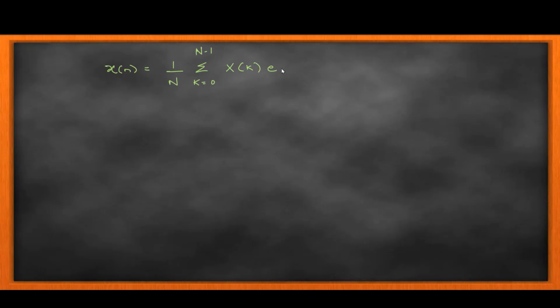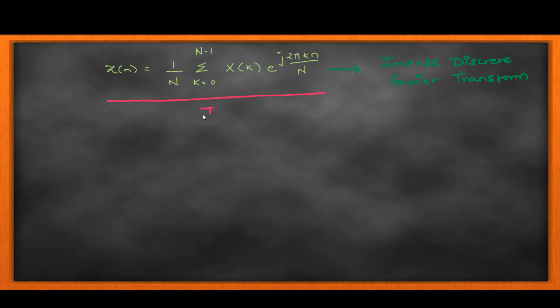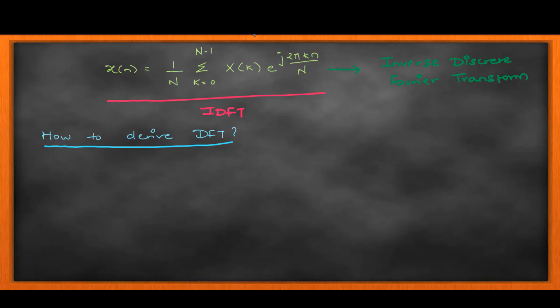We are starting with the inverse, and from the inverse we get to the discrete Fourier formula. This is your inverse discrete Fourier transform. An interview question: why is there a 1/N in this formula? That 1/N is missing in the DFT formula — we will see why. This is a question commonly asked in advanced interviews, such as ISRO or service exam interviews at the final stage of recruitment.